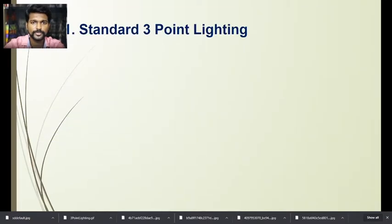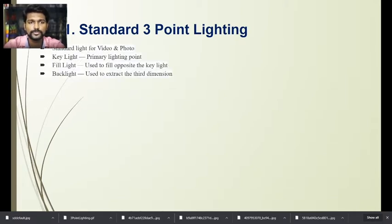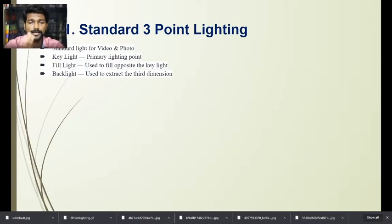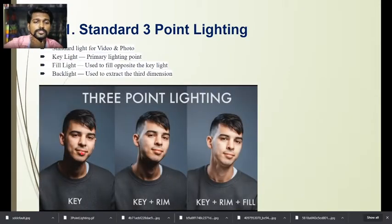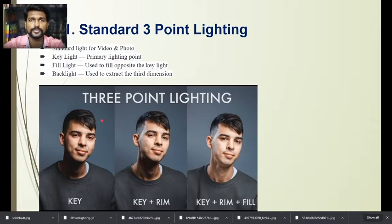The first type is standard three-point lighting. This is called standard because this type of lighting is used in both videography and photography. In three-point lighting, we use a key light, fill light, and backlight. The backlight is not for the background — it is completely used for the subject. Don't confuse background light with backlight. The key light is the primary light, which has more output compared to the fill light.